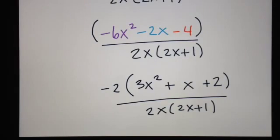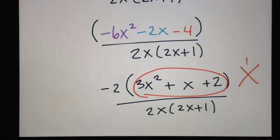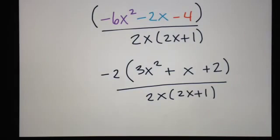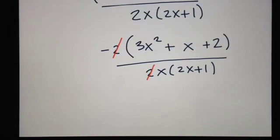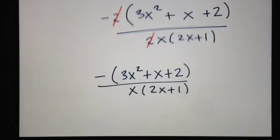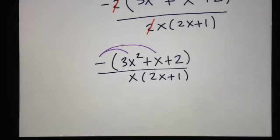Now 3x squared plus x plus 2 looks like a diamond problem — slide, divide, bottoms up. Sliding the 3 over to the 2 gives 6, so I need something that multiplies to 6 and adds to 1. That's not possible: 1 times 6 or 2 times 3 neither adds to 1. So that trinomial can't be factored. This is as factored as it can be. I can cancel the 2s, and that gives the final answer. You can leave the negative out front, or distribute it back in to remove the parentheses — either way is fine.